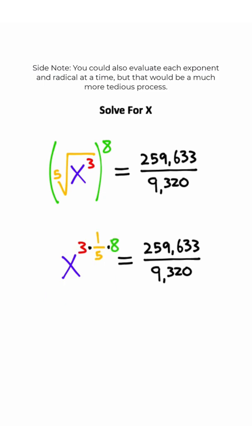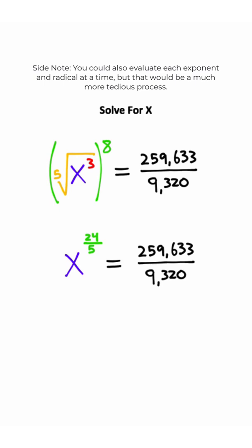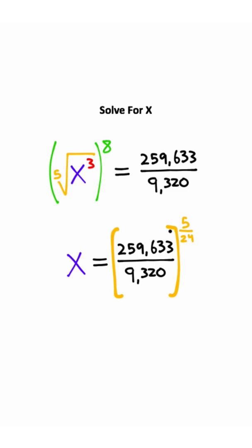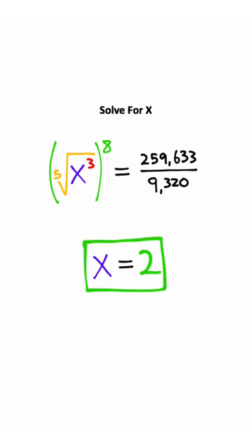So we just have 3 times one-fifth, which is 24 over 5. And now it's pretty clear. I can take both sides of my expression and raise it to the five-twenty-fourths power, leaving me with just x on the left side. And if you evaluate this number on the right side here on your calculator, there's actually a theme for this video. You should get the number 2. And that is the solution for x in this problem.